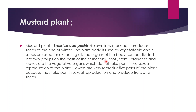Roots, stems, branches and leaves — these are the vegetative organs which we use for food purposes. We call them vegetative organs because they do not take part in sexual reproduction. The flowers are the only part that takes part in sexual reproduction, and the fruits and seeds help them.